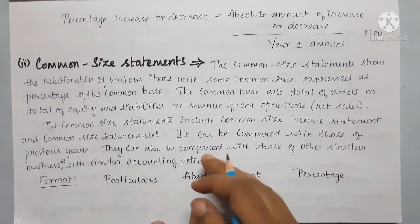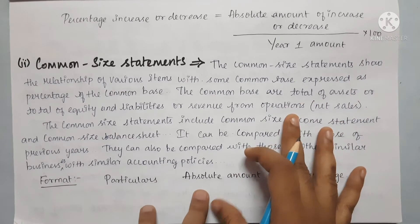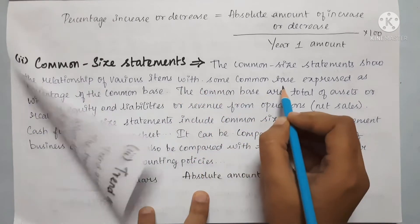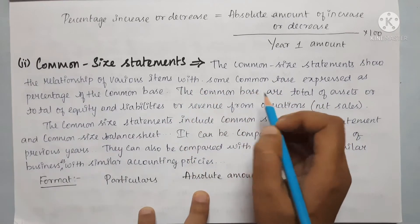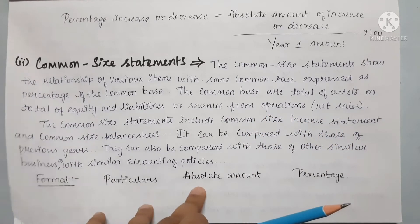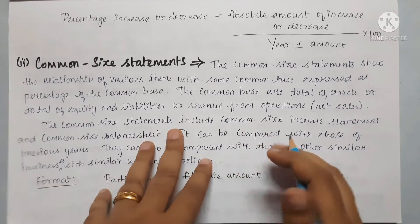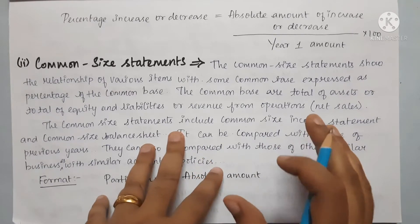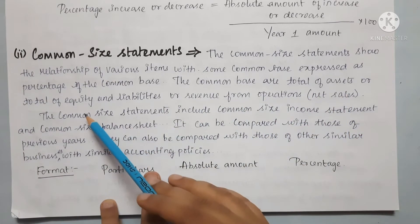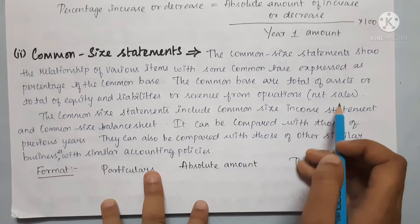In this video, we will talk about the theory part. The common-size statement shows a relationship of various items with a common base. The common bases are total of assets, or total of equity and liabilities, or revenue from operations — that is, net sales.